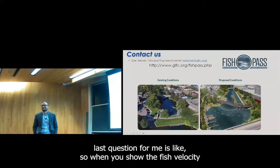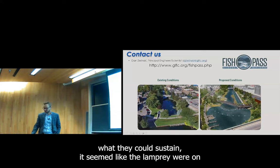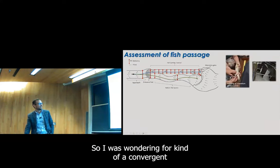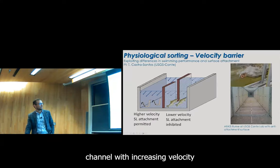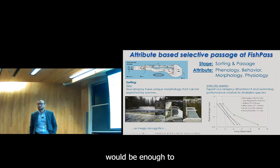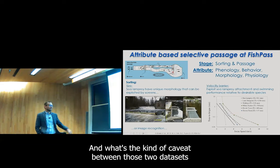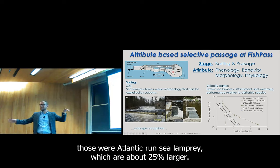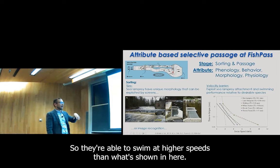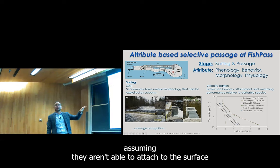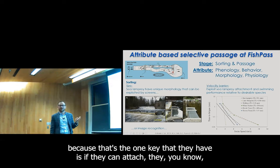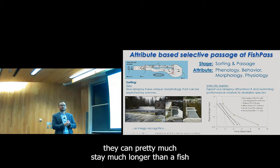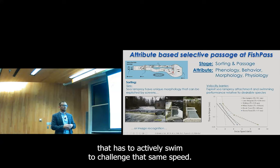Question about whether sea lamprey — which appeared on the low side for velocity — could be tired out using a convergent channel with increasing velocity: the caveat between those two data sets is that the fish swum at the Conte lab were Atlantic run sea lamprey, which are about 25% larger, so they're able to swim higher speeds. But yes, the idea is you'd be able to tire out sea lamprey assuming they aren't able to attach to the surface — because if they can attach, they can stay there much longer than a fish that has to actively swim against that same speed.